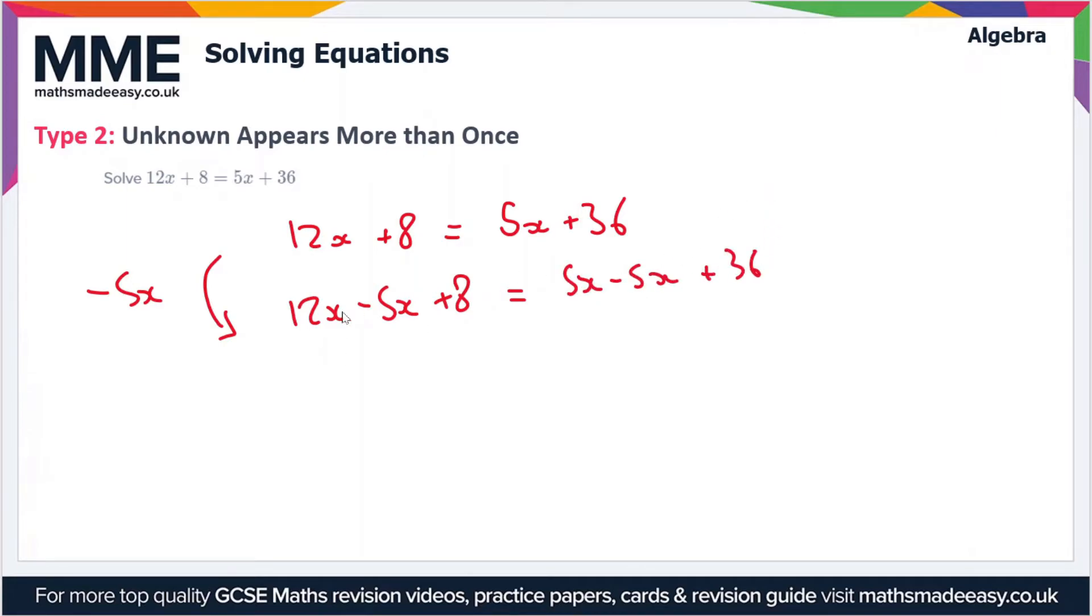I've done quite a lot of working on this one line here, but it's just to show what's going on. 12x minus 5x is 7x, so we've got 7x plus 8 here. 5x minus 5x is 0, and then we've got 36 here. So we've got 7x plus 8 is equal to 36, and now we need to remove this 8 to get the x on its own.